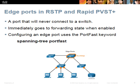RSTP achieves rapid convergence in part with the creation of a new port type: edge ports. An edge port is a port that is not connected to another switch — typically it will be connected to a PC or a router. Since there is no switch at the other end, the port cannot possibly participate in a layer 2 loop, so no spanning tree calculations are needed for it, and it is immediately determined to be a forwarding port. To configure a port as an edge port, enter the 'spanning-tree portfast' command in interface mode.